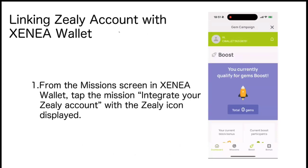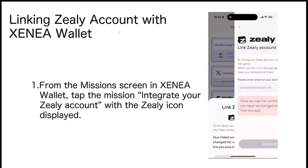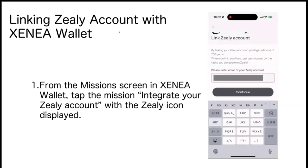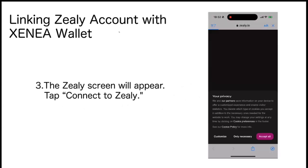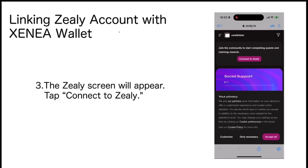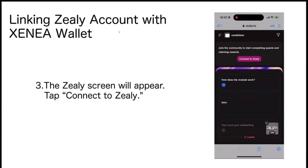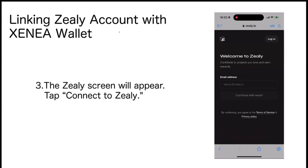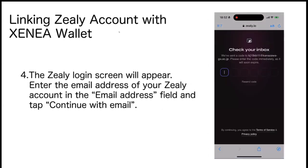From the Mission screen in Xenia Wallet, tap the Mission Integrate Your Zealy Account with the Zealy icon displayed. Enter the email address of your Zealy account in the Email Address field and tap Continue with your email address for your Zealy page.